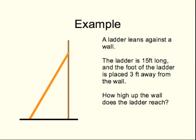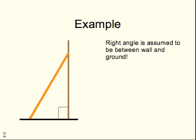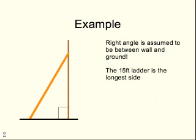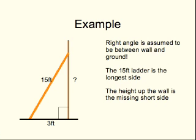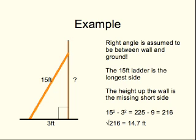Here's a classic example: a ladder leaning against a wall. The ladder is 15 foot long and the foot of the ladder is placed 3 feet away from the wall. How high up the wall does the ladder reach? The right angle is always assumed to be between the wall and the ground. The 15-foot ladder forms the longest side — you can tell that by looking at the diagram. The height up the wall is the missing short side, since you know the foot of the ladder is 3 feet away. The calculation is a subtracting problem: square 15 and square 3, subtract those numbers to get 216, then take the square root, which comes out to 14.7 feet. Note that 0.7 of a foot isn't 7 inches, but exam questions these days would likely use metric units anyway.